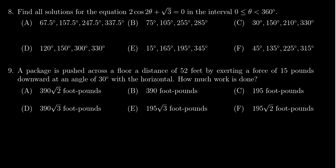We're asked to find all the solutions to the equation 2 cosine of 2θ plus the square root of 3 equals 0. And we want to do this in the interval θ ranges from 0 to 360 degrees, so we're going to solve this in degrees here.